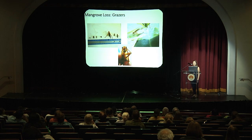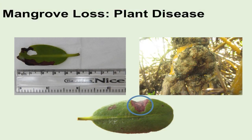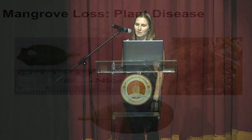Another cause of natural loss that's probably less studied is plant disease. One of the major issues with plant disease is that there can be foliar pathogens, meaning they cause lesions or blights on the leaves, which also reduces the photosynthetic capacity of the trees.